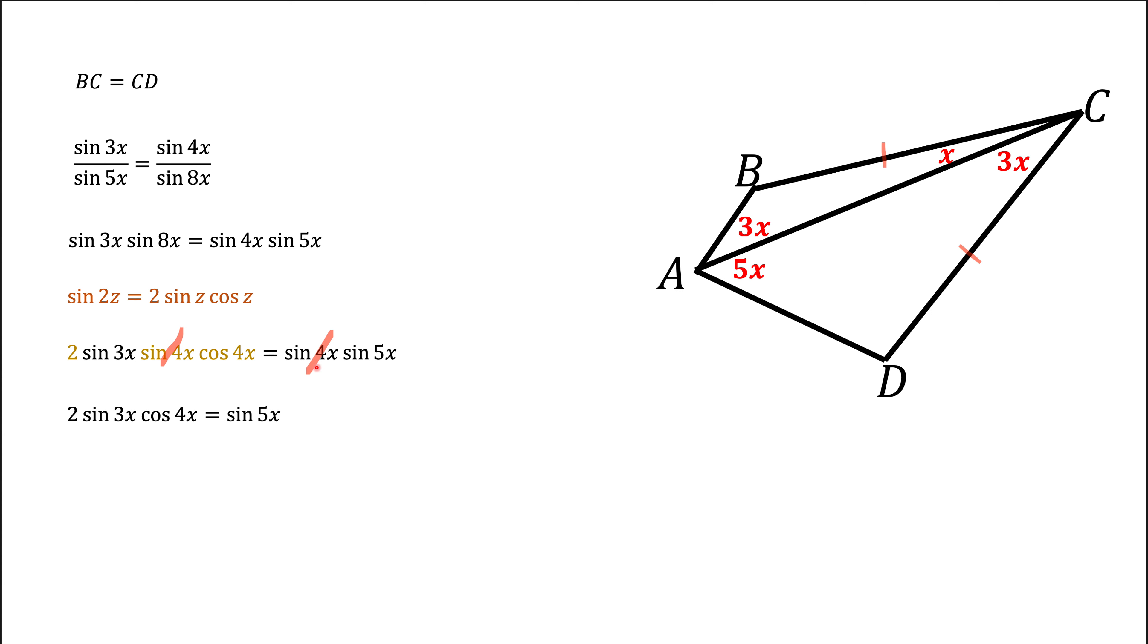Now what we can do is think about this 2 sine of an angle times cosine of another angle. We can use a formula. In this case, u will be 4x and v will be 3x. If we apply this formula, we get sine of 7x minus sine x equals sine of 5x.